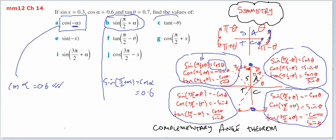Looking at the third one: the tangent of negative theta. Negative theta is in the fourth quadrant. Tan is negative in that quadrant, so it's going to equal negative tan of theta, and tan of theta is 0.7, so negative 0.7.